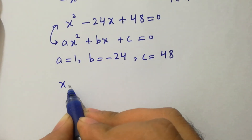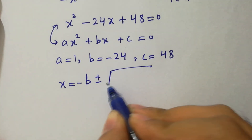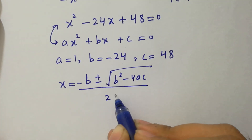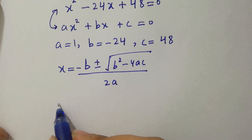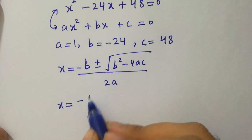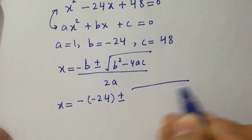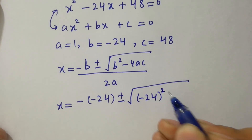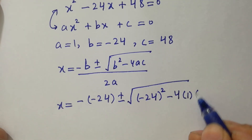Apply the quadratic formula: x equals minus b plus or minus square root of (b squared minus 4ac) over 2a. Putting the values of a, b, and c: x equals minus (minus 24) plus or minus square root of (minus 24 squared minus 4 times 1 times 48).